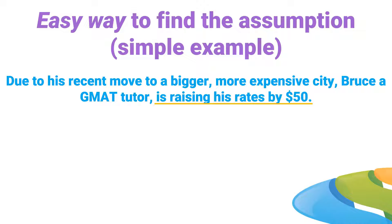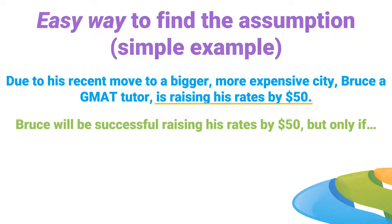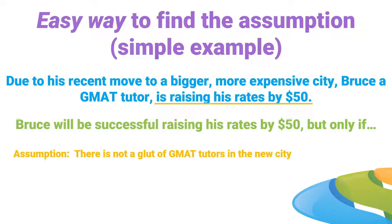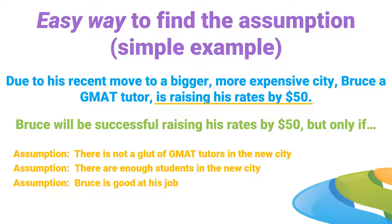To find the assumption, we say: 'Bruce will be successful raising his rates by $50, but only if...' Anything that finishes that sentence logically is a valid assumption. For example: but only if there's not a glut of GMAT tutors in the new city; but only if there are enough students in the new city; but only if Bruce is good at his job; but only if schools still require the GMAT. That's how it works.